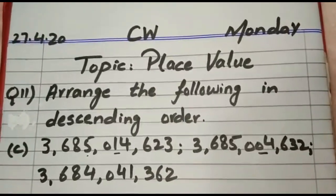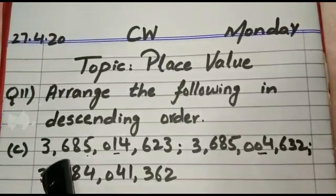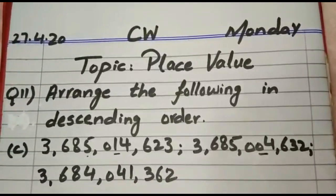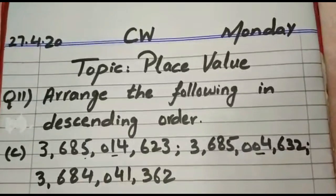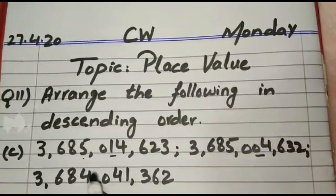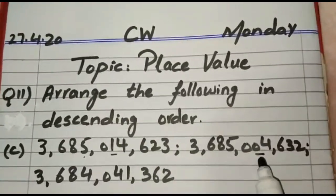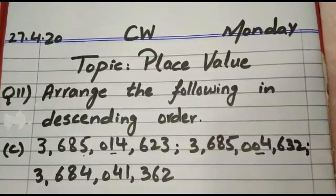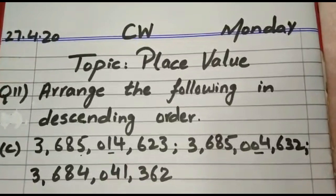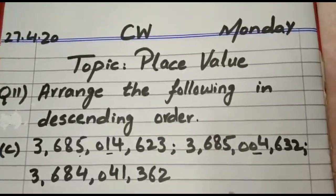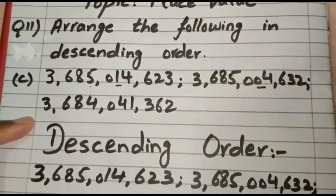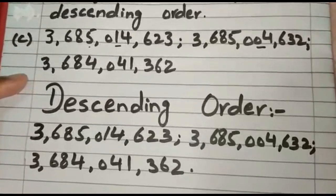We have to see the same digits. 3,6,8,3,6,8,3,6,8 is same. Now here is 5, 5 and 4. Which one is bigger? 5 is bigger. So we will consider these two values. After 5 here is 0, 0. After 0 here is 1 and 0. Which is bigger? Definitely 1 is bigger. So we will take this value. This is the biggest one. After this we will take this value. Then this value is left. This is the smallest one. We will write it down. So this was the descending order.